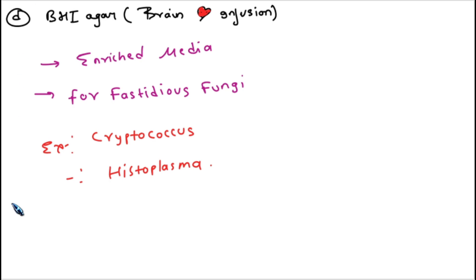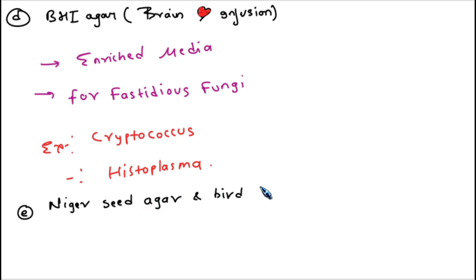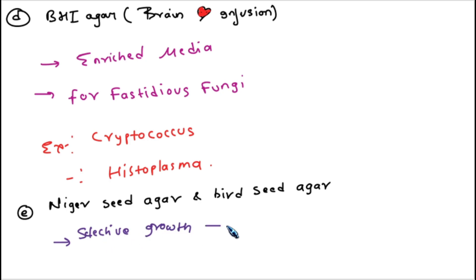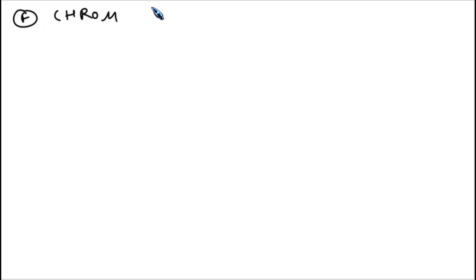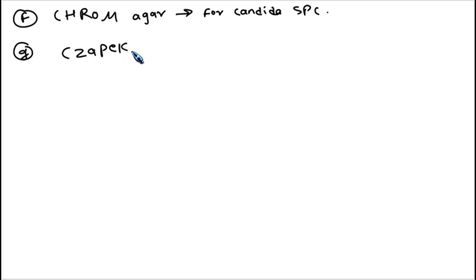The fifth culture media is Niger seed agar, also called Bird Seed Agar. It is a special selective media for the selective growth of Cryptococcus. The sixth media is Chrome Agar, used for Candida. The seventh is Czapek Dox Agar, used for Aspergillus.